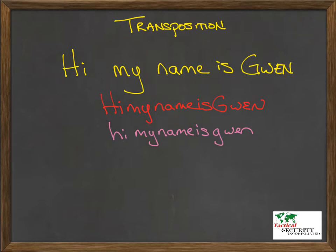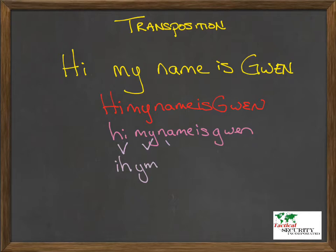The next thing we would do is alter the order, but do it in some kind of organized format so that it's known by the other side so that they could actually go through the decryption process. So if we do something really basic, we'll just take the first and the second letters and alter their order, then the next two letters, and the next two, and so on down the line until we get to the end.